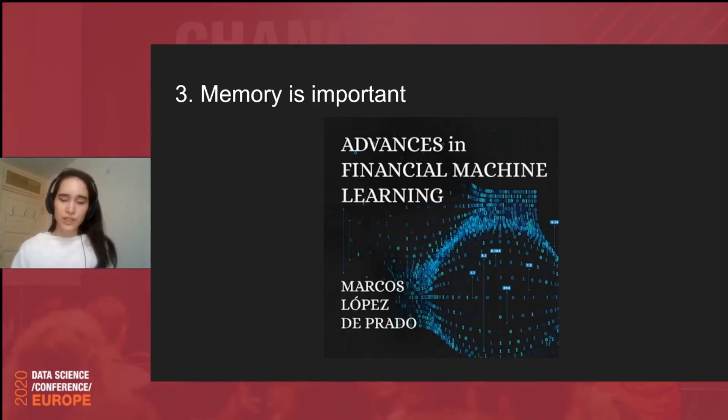Okay. So, that was the second point that perfect accuracy is not enough. Next point is that memory is important. So, this is inspired by a book called The Advances in Financial Machine Learning by Marco Lopez de Prado. Lopez de Prado is a well-regarded figure in the field of financial mathematics. And I encourage you, if you're interested to read this book, you'll learn much more about pitfalls and solutions in using machine learning in financial markets.